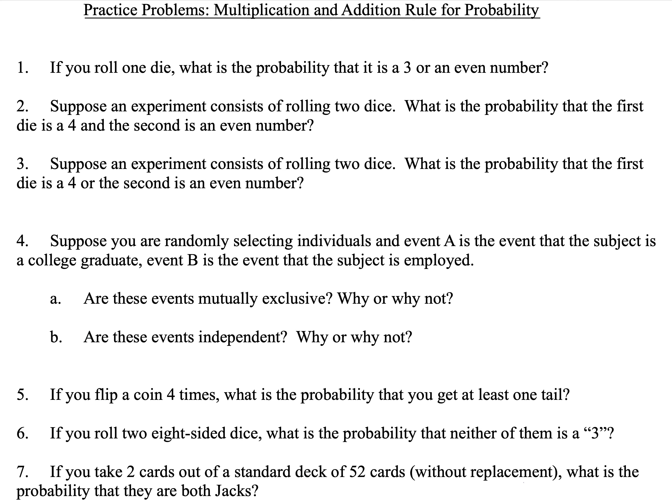Number four: suppose you are randomly selecting individuals, and event A is that the subject is a college graduate, and event B is that the subject is employed. Part A: are these mutually exclusive, and why or why not? Part B: are these independent, and why or why not?